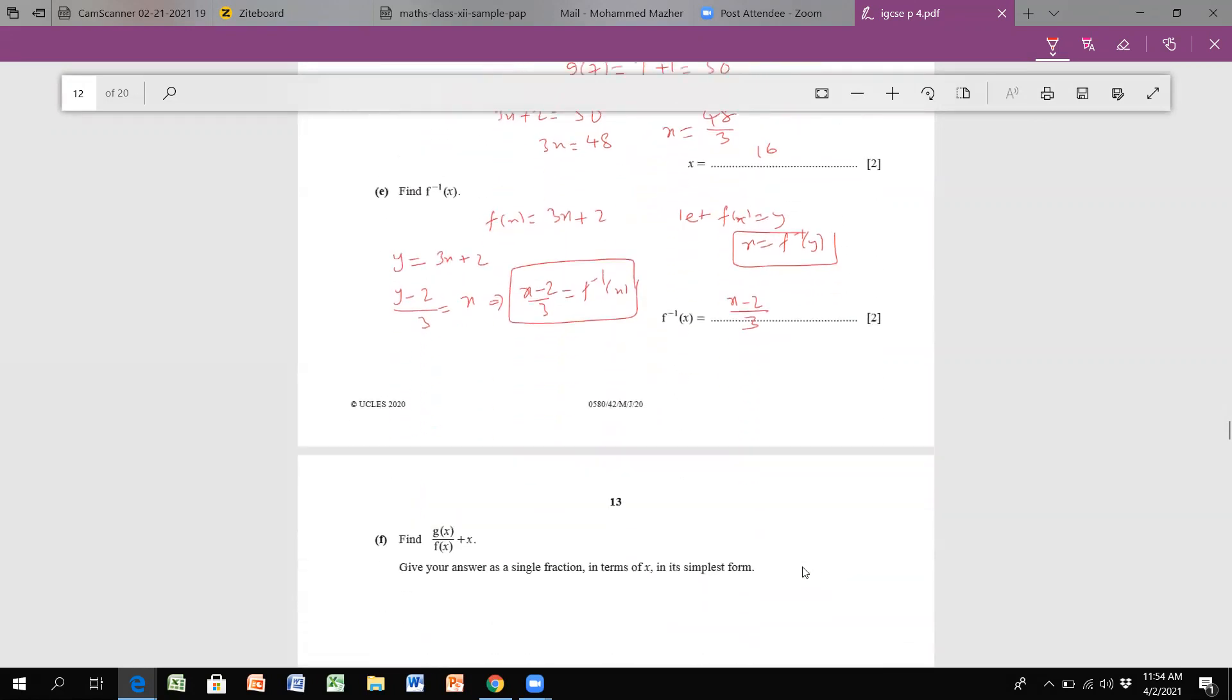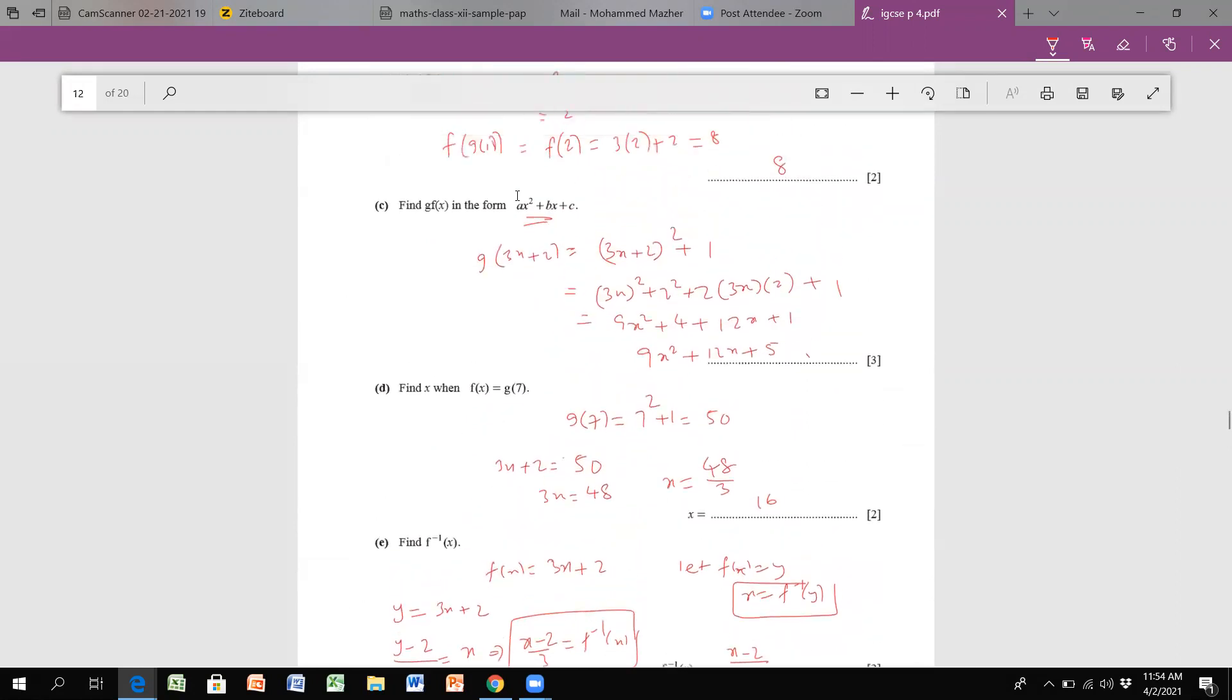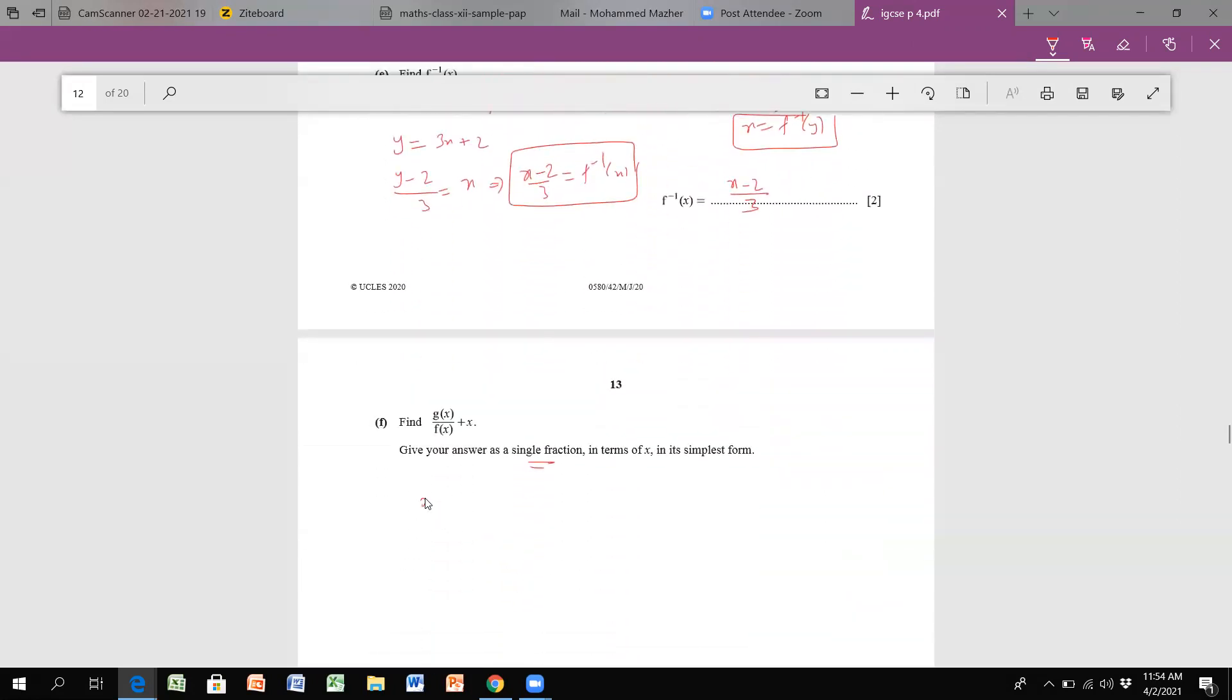Moving on to the next one, we have g(x) over f(x) plus x, and give your answer in a single function in terms of x in its simplest form. So g(x) divided by f(x), if we go back, we have (x² + 1)/(3x + 2) plus x. This we can do by taking LCM or multiplying with 3x plus 2. So (x² + 1) plus x times (3x + 2) over 3x plus 2, because we need to have a proper fraction.